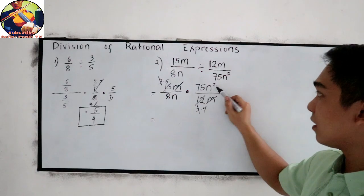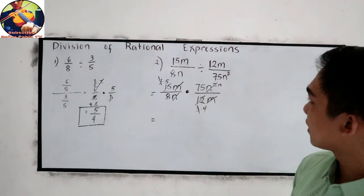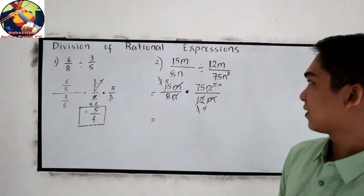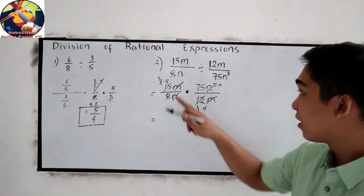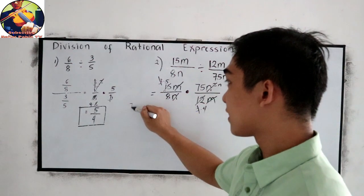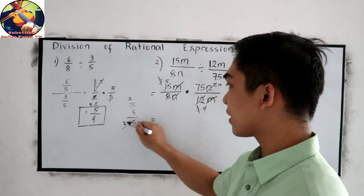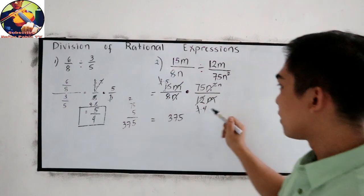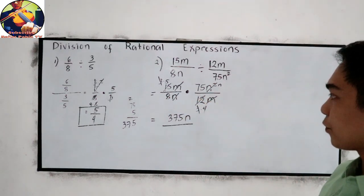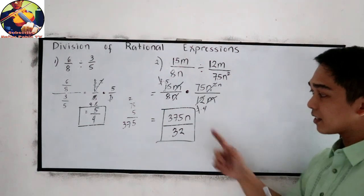Then n squared divided by n will become n. Let's now find our final answer. 75 times 5 is 375, so we have 375n. All over 8 times 4, which is 32. Our final answer is 375n all over 32.